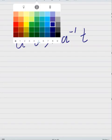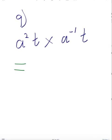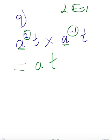For a² × a⁻¹ × t × t: there are no large negatives and no numbers to multiply. Variables are A and T. For A: 2 + (−1) = 1, so A to the power of 1, which is just A. For T: 1 + 1 = 2, giving T². Final answer: at².